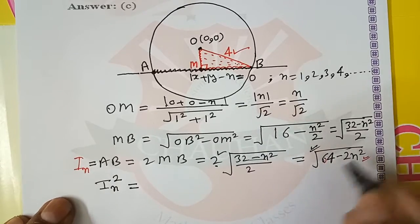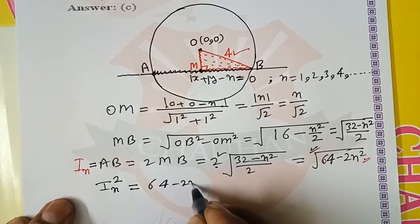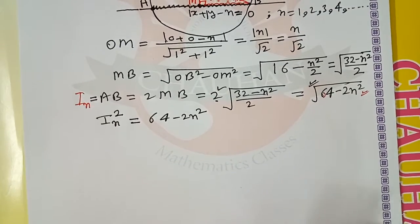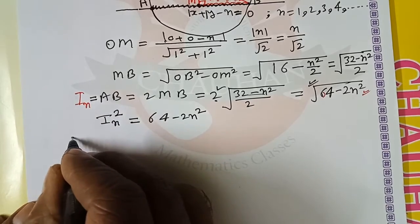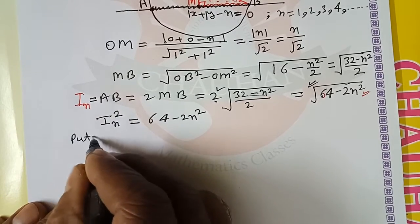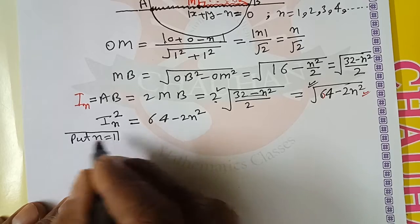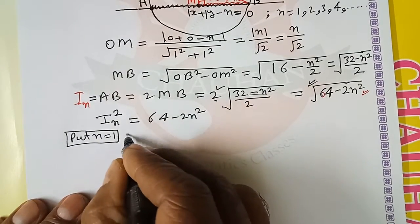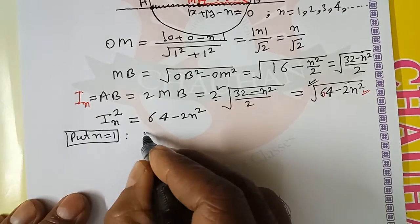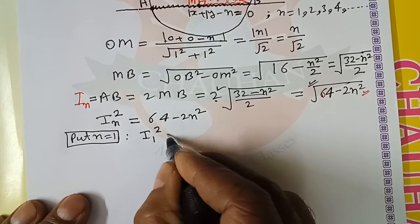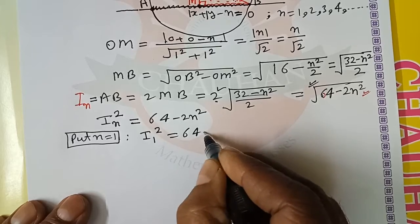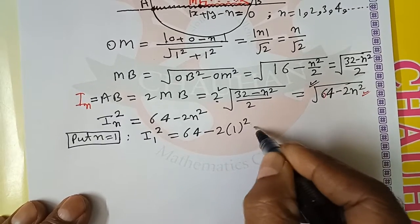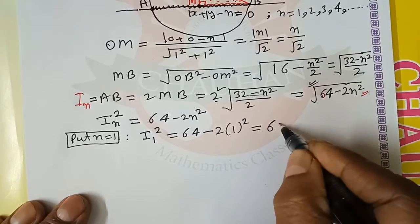We name this the nth intercept i_n. For different values of n, there are several intercepts. If we square it, the nth intercept squared equals 64 minus 2n squared. Now put different values of n. Put n equal to 1: i₁ squared equals 64 minus 2 into 1 squared, which equals 62.